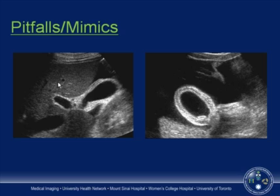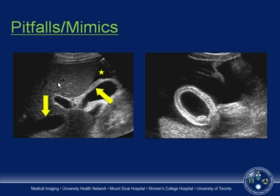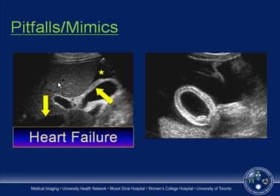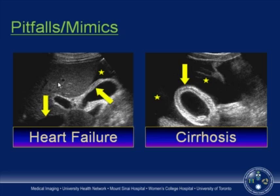Other mimics include congested liver from heart failure: an older patient showed a slightly distended gallbladder with no stones, edematous wall, pericholecystic fluid, and importantly a distended inferior vena cava and hepatic veins with a bulbous liver margin — secondary gallbladder changes from cardiac failure. Another case showed an edematous gallbladder wall with a soft stone or sludge ball and significant free fluid in a patient with liver cirrhosis.